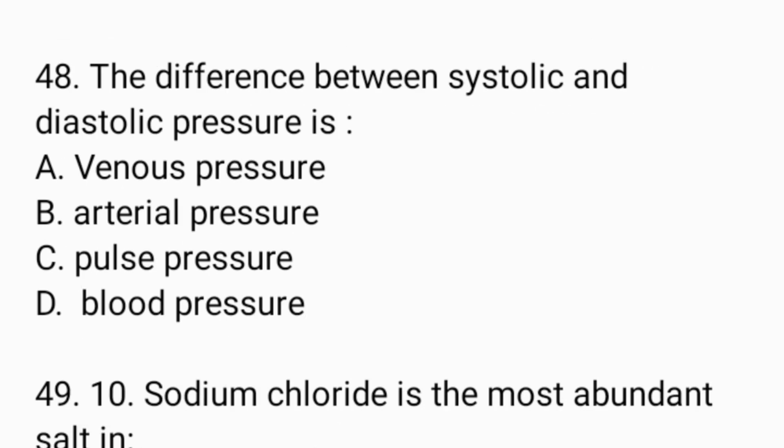Next question: The difference between systolic and diastolic pressure is — Option A: venous pressure. Option B: arterial pressure. Option C: pulse pressure. Option D: blood pressure. And the answer is Option C, pulse pressure.